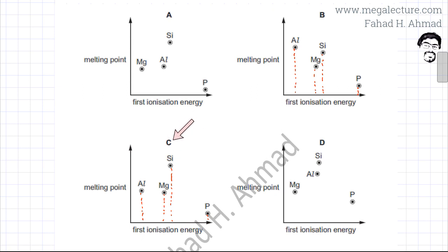So option C looks perfectly correct because silicon would have the highest melting point. Phosphorus forms simple molecules. The molecule is P4, so that has the lowest melting point. And the metals over here, they have the intermediate or they have relatively high melting points as well, but not as high as silicon.